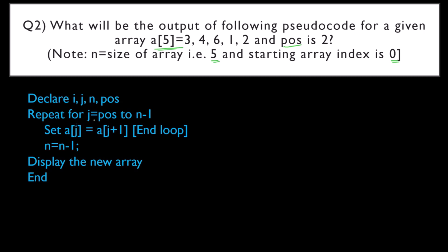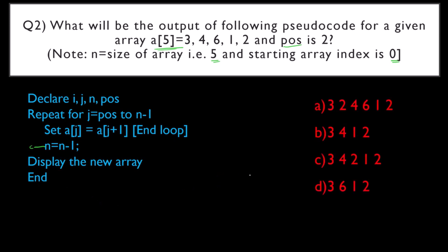The pseudocode is: declare i, j, n, pos. Repeat for j = pos to n minus 1: set a[j] = a[j+1]. End loop. Display the new array. End. Note that the indentation here is actually wrong — this is to confuse you. Since this is pseudocode, look carefully about where the end loop is. The n-1 is not related to an inner loop. Options: a) 3,2,4,6,1,2  b) 3,4,1,2  c) 3,4,2,1,2  d) 3,6,1,2.